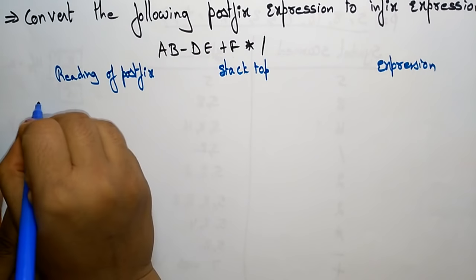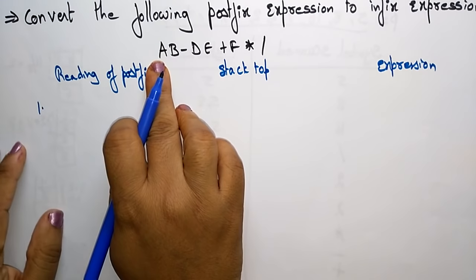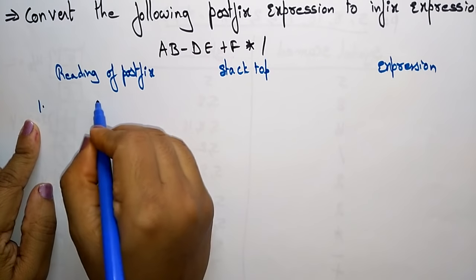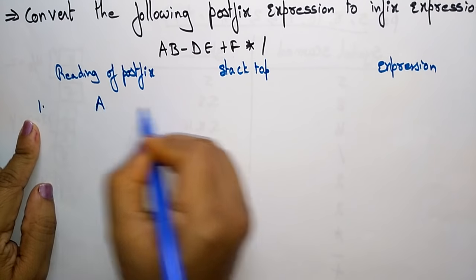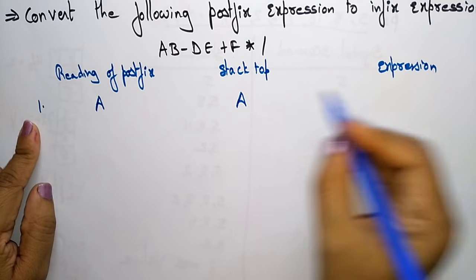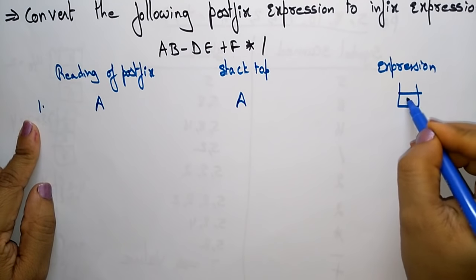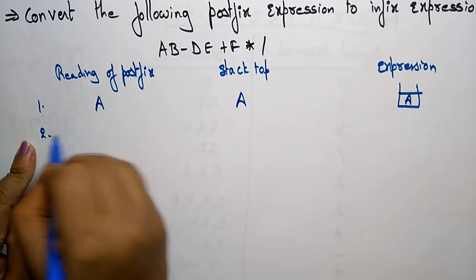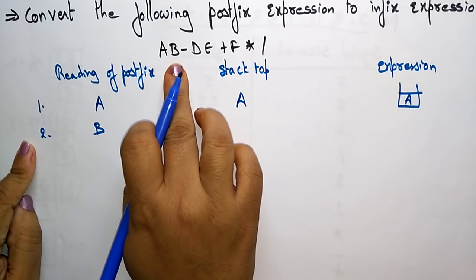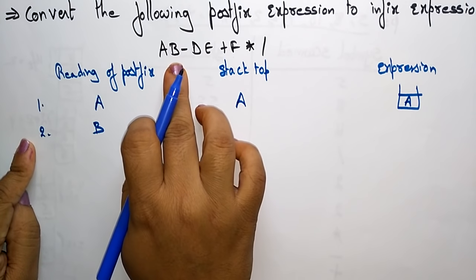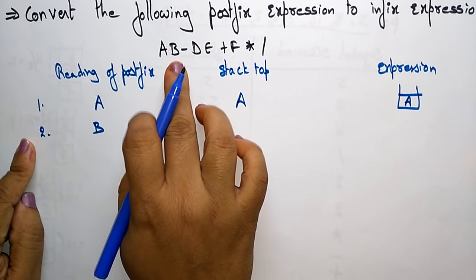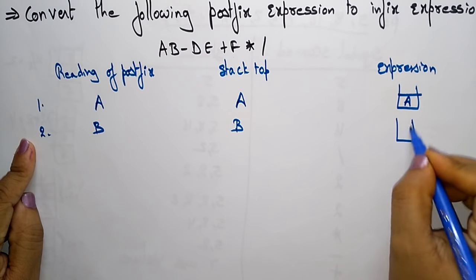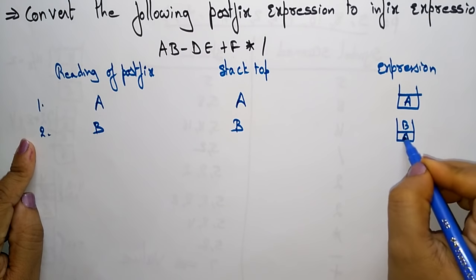The first reading of the postfix expression is A. So A is placed on the top of the stack. The next operand is B, so B is also placed on the top of the stack. Now the stack contains A and B.